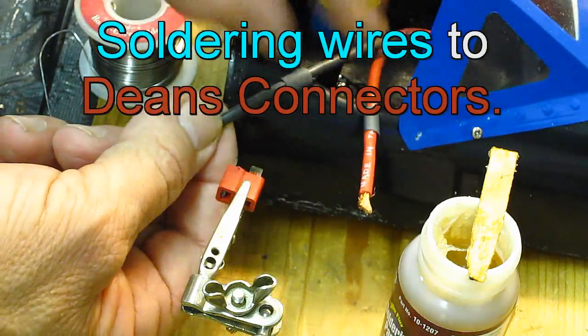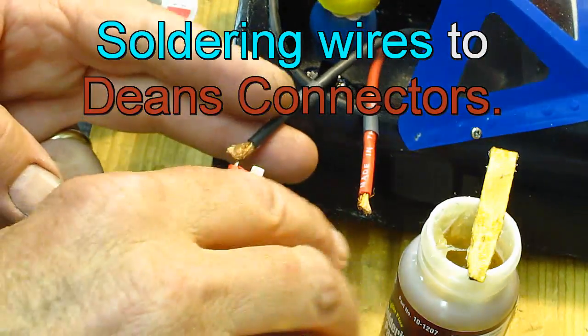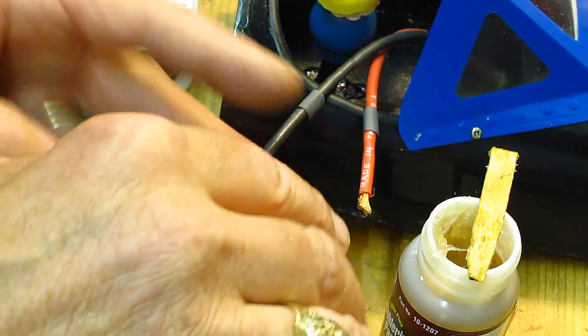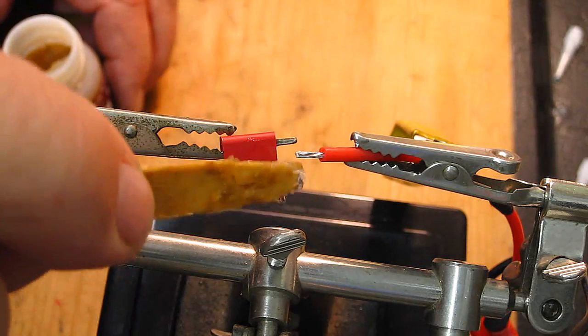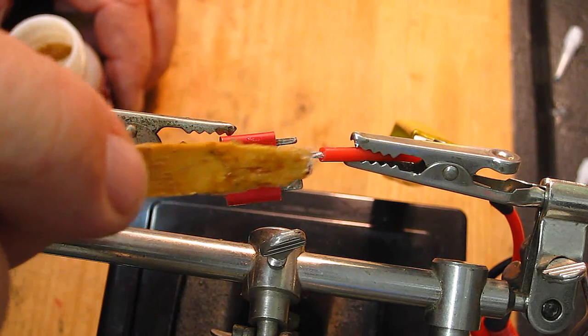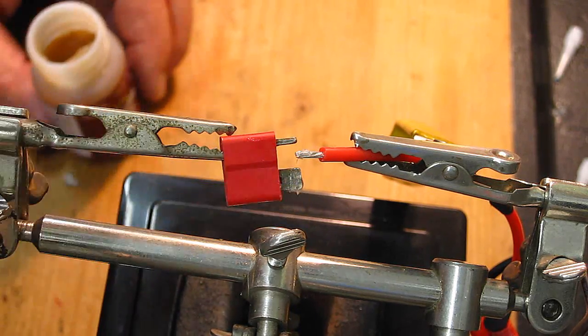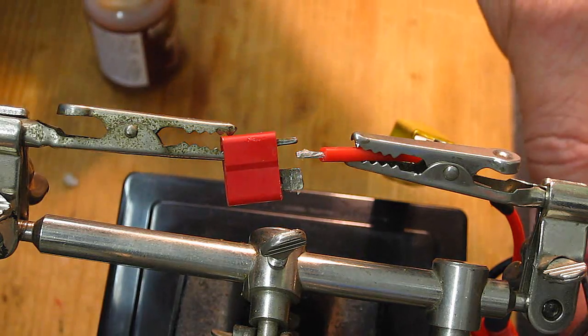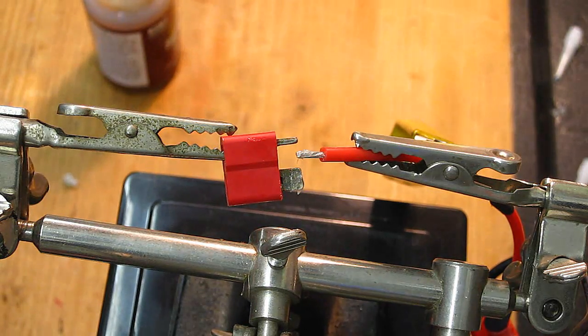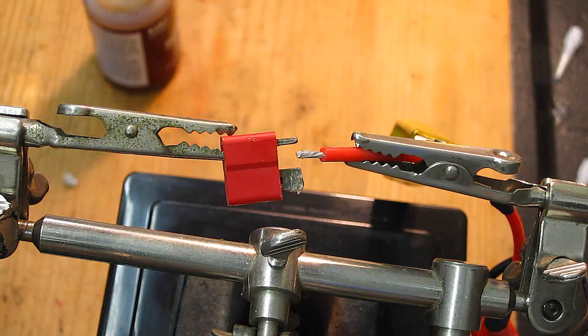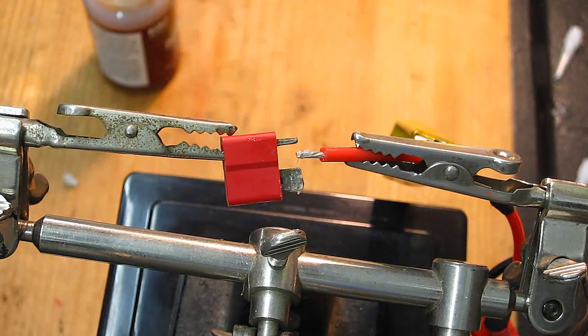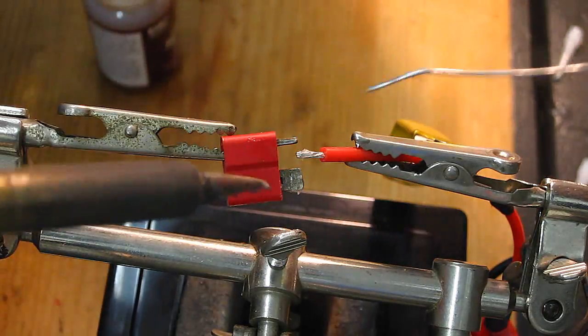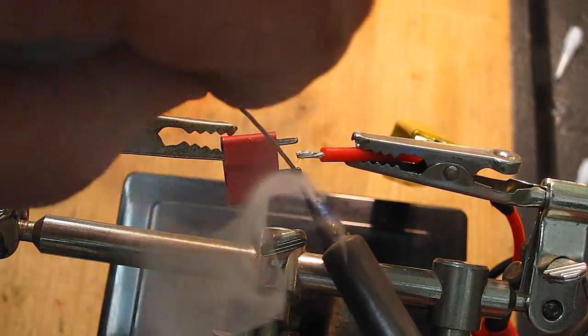The first thing you do is put a little flux on the wire and on the connector, and make sure you have your heat shrink tubing on. What we want to do is take the solder and tin the terminal, then tin the wire.